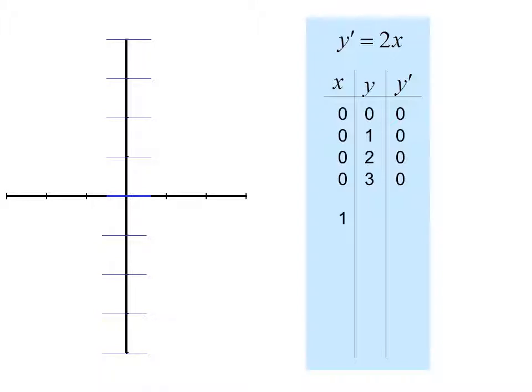So let's move over. If x is 1 and y is 0, the slope is 2. So now I draw a line segment with a slope of 2. At 1, 1, the slope is still 2, so I draw another line segment. And we see that once again, because there is no y in the derivative equation, the slope is going to be the same as long as x is 1. So we fill those in.